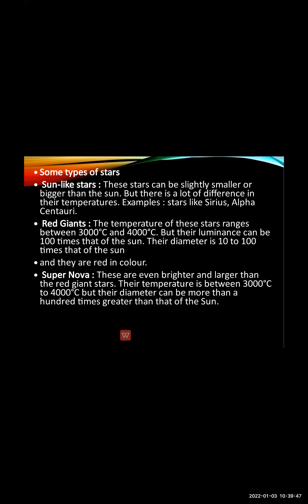Now let us move to the next type of star, that is the red giant star. The temperature of a red giant star ranges from 3000 to 4000 degrees Celsius. As the name suggests, 'giant' means bigger in size, and 'red' means the color of the star is red. It has its own light and is luminous.